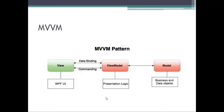ViewModel has a direct connection with Model — it is like business and data objects. The database is the model. Data is stored inside Model, and Model and View do not have a direct connection — they are connected through ViewModel. Because UI and data do not have any direct connection, the data will be more secure in the MVVM pattern.